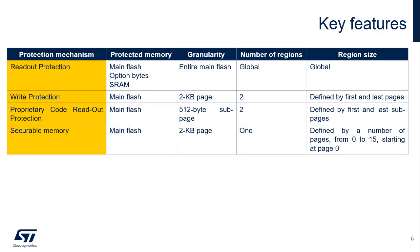This table summarizes the features of the various protection mechanisms. It provides the following information: type of memory which is protected, granularity of the protection, number of protection areas, and definition of the size of the protected area.